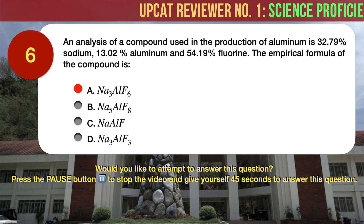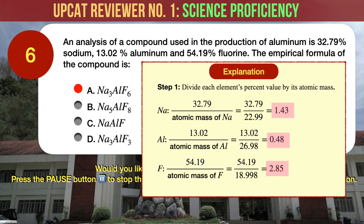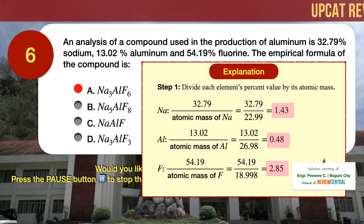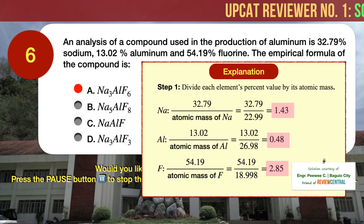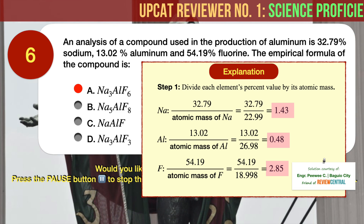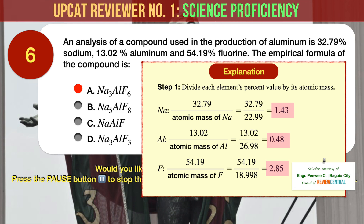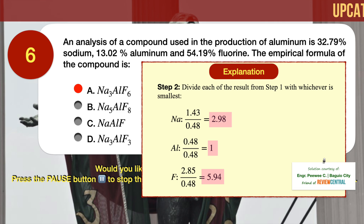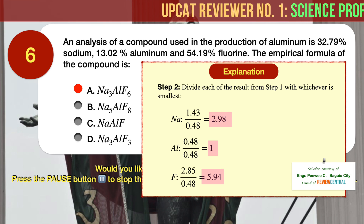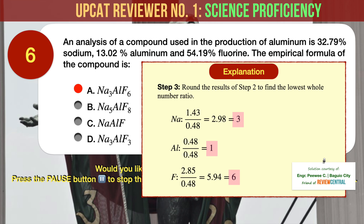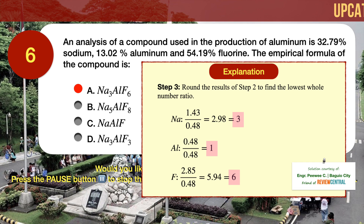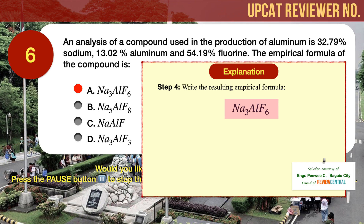The correct answer is A: Na3AlF6. To determine the empirical formula given the percent composition of each element, follow these steps. Step 1: Divide each element's percent value by its atomic mass. Step 2: Divide each result from Step 1 by whichever value is smallest. We get: Sodium 2.98, Aluminum 1, Fluorine 5.94. Step 3: Round the results to find the lowest whole number ratio. We arrive at 3, 1, and 6 for sodium, aluminum, and fluorine respectively. Therefore, the empirical formula is Na3AlF6.